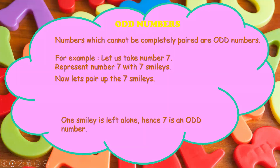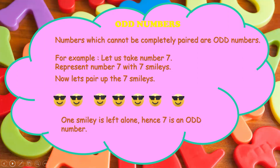Odd numbers. Numbers which cannot be completely paired are odd numbers. For example, let us take number 7. We represent number 7 with 7 smileys. Now let's pair up the 7 smileys.